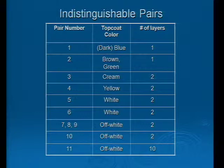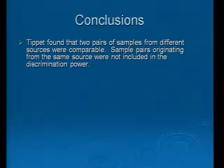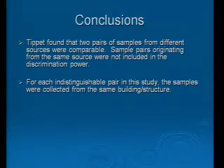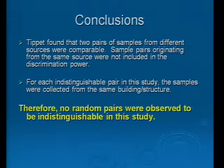Conclusions. Tippett found that two pairs of samples from different sources were comparable. I should note that in his discrimination power of one and a quarter million and one in a million, depending on techniques used, he excluded from that discrimination assessment any pairs that originated from the same source. He still found two pairs of samples from different sources that were comparable. For each indistinguishable pair in this study, the samples were collected from the same building or structure. Therefore, within this study, there were no random pairs observed to be indistinguishable — everything that we paired up came from the same building structure.